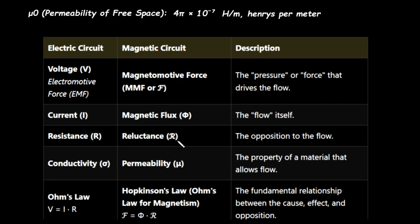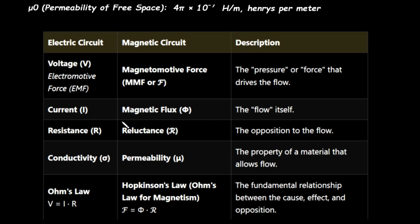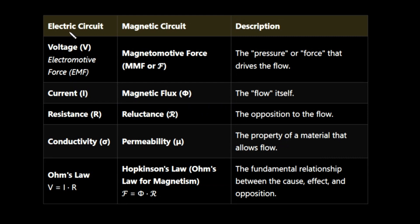The magnetic equivalent of resistance is reluctance, represented by R. Conductivity, represented by Greek letter sigma, corresponds to permeability in a magnetic circuit, represented by mu. These are the properties of the material that allow flow. Ohm's law in an electric circuit is V = I × R, and in a magnetic circuit, Hopkinson's law (Ohm's law for magnetism) is F = phi × R, or MMF = phi × R, representing the fundamental relationship between cause, effect, and opposition.